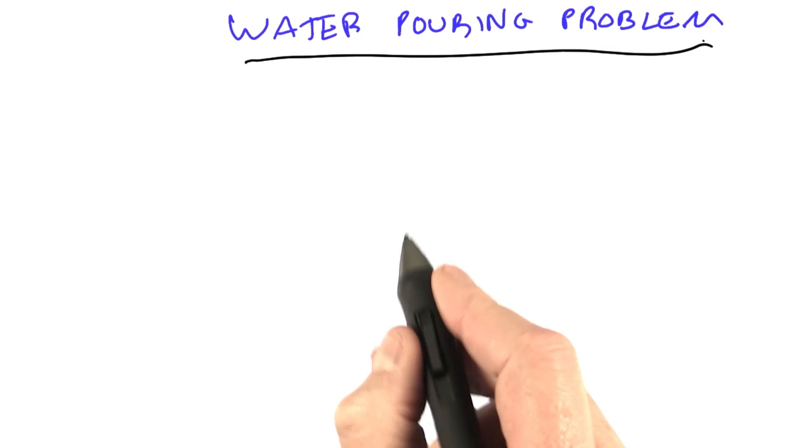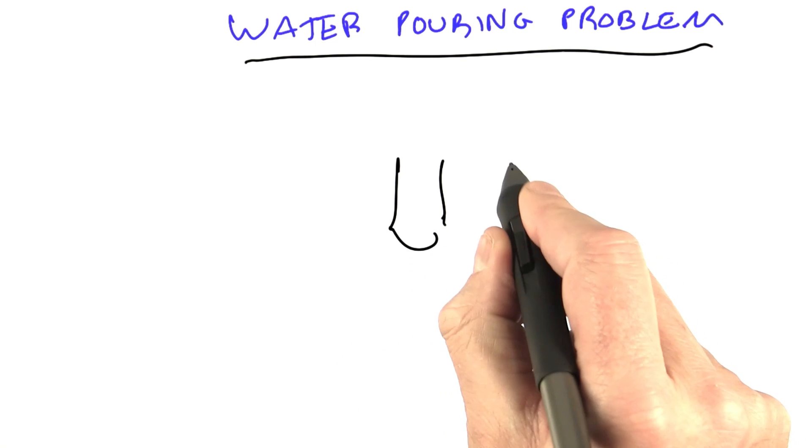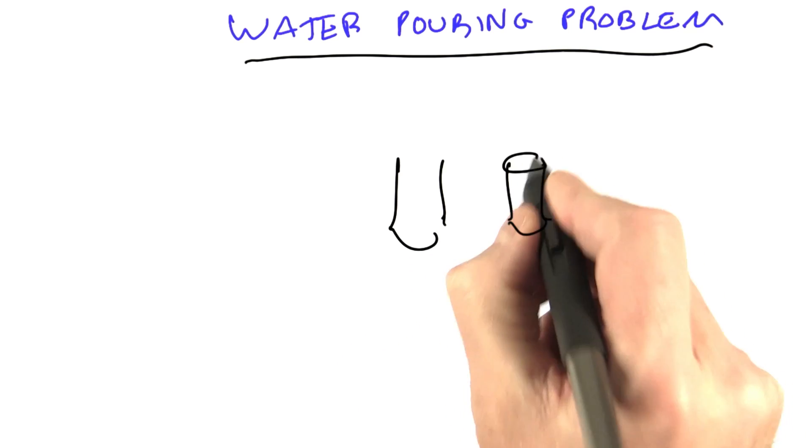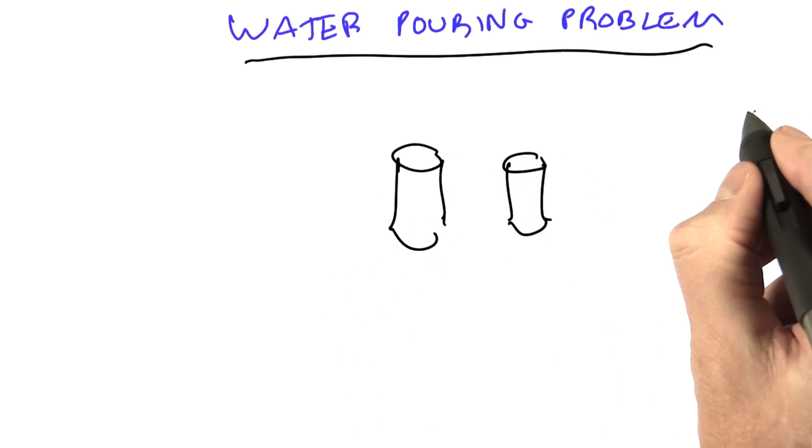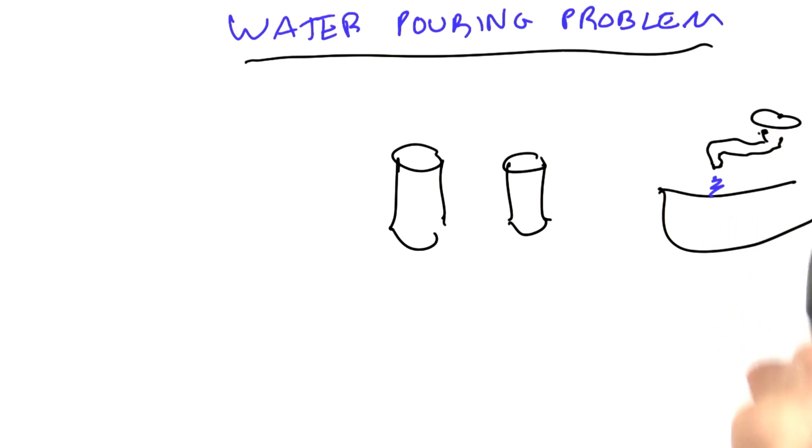I'm going to begin this unit with an old problem known as the water pouring problem. Here's what we're given: two glasses of water, and we have a faucet and a sink, which can be the source of as much water as we want.